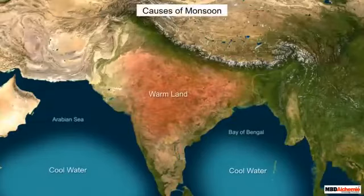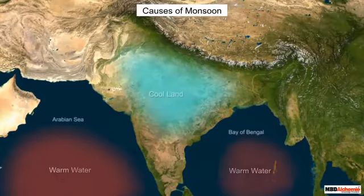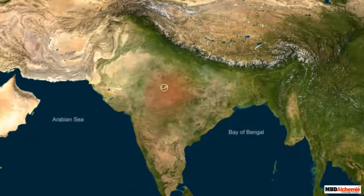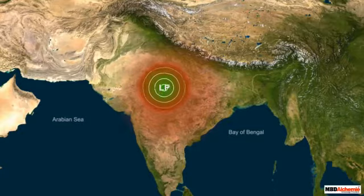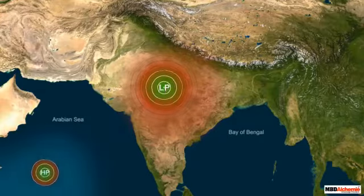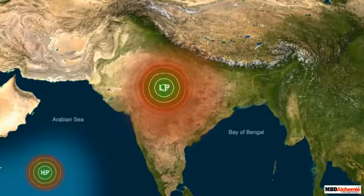Let us discuss the causes of this seasonal reversal of wind from sea to land and land to sea. The main cause is the differential heating and cooling of land and its surrounding water bodies, i.e., seas and oceans. During summer, land is hotter, and thus low pressure develops over the interior parts of the large Indian landmass. Simultaneously, high pressure conditions develop over the seas and oceans surrounding India.